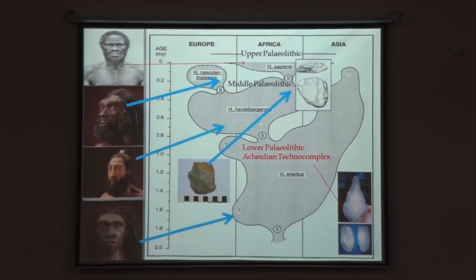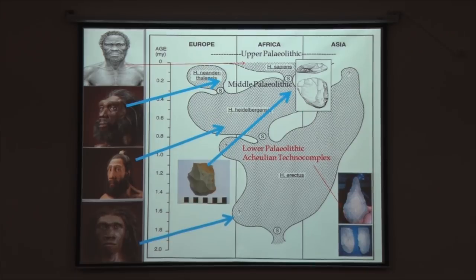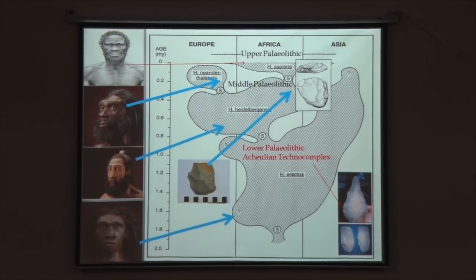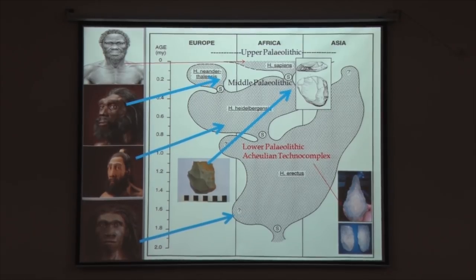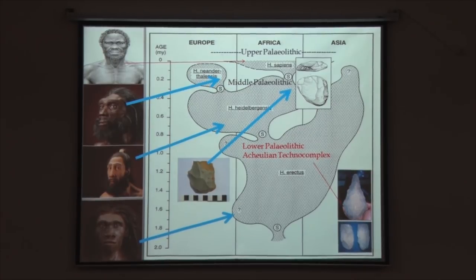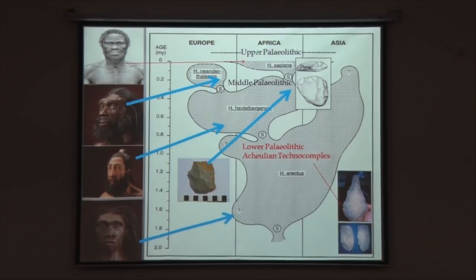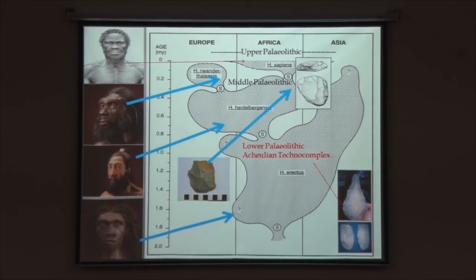Both Homo erectus and Homo heidelbergensis are older in Africa than in other parts of the Old World. Homo erectus expanded into Europe and Asia, and Homo heidelbergensis sites are known from some parts of India. One human ancestral fossil found several decades ago has been debated — whether it is Homo erectus, Archaic Homo sapiens, or Homo heidelbergensis — and the conclusion is that it is Homo indeterminate. Homo heidelbergensis gradually gave rise to two distinctive species: Homo neanderthalensis, found dominantly in Europe, and Homo sapiens.